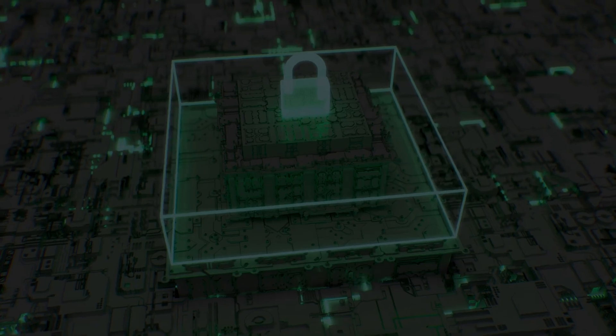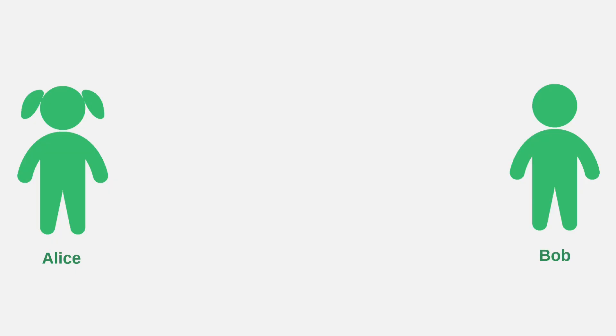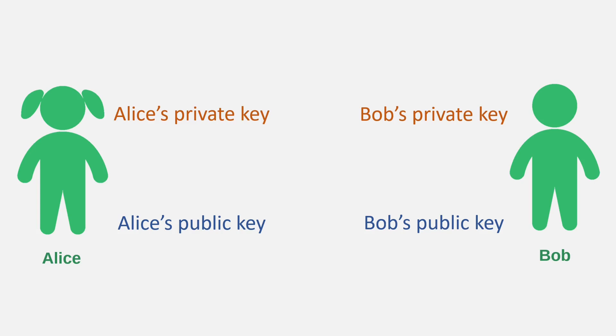In encryption, public-private key cryptography allows two people, such as Alice and Bob, to establish a shared secret without transmitting it directly. Each person has a public key visible to everyone and a private key kept hidden.